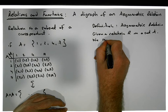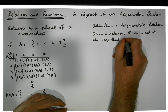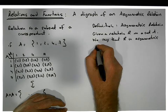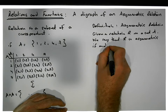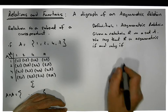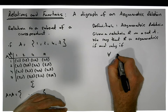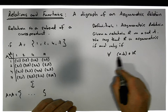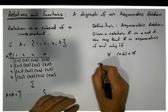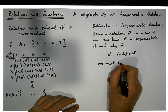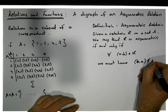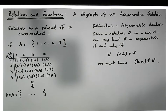Given a relation R on a set A, we say that R is asymmetric if and only if for each and every ordered pair (a,b) that is an element of R, we must have that (b,a) is not in R.